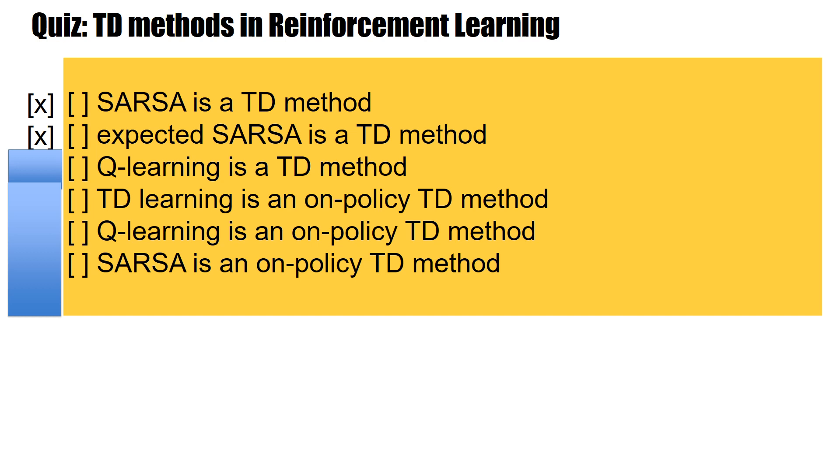Q-learning is a TD method. Of course, Q-learning is a TD method. And now, we also ask, is it on policy or off policy? TD learning, as we have seen it, is an on policy TD method. Is that correct? Q-learning is an on policy TD method. Is that correct? SARSA is an on policy TD method, and Q-learning is off policy. But the other two are indeed on policy.